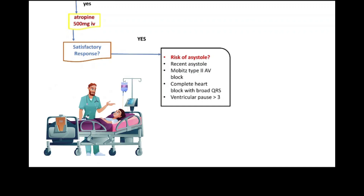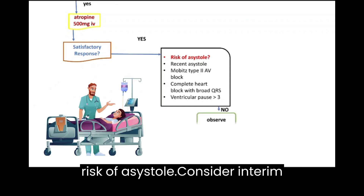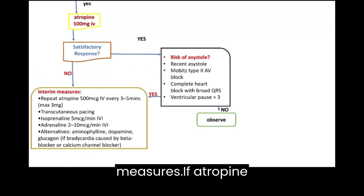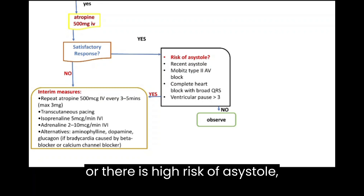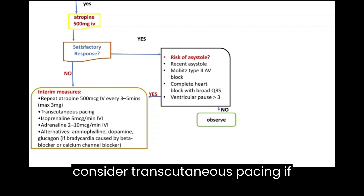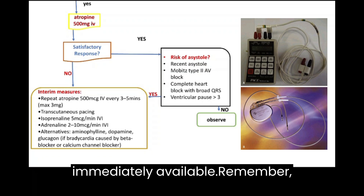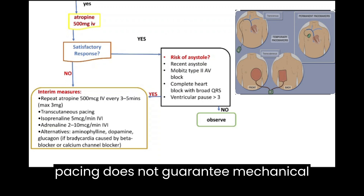Evaluate response and keep the patient on observation if there is no risk of asystole. Consider interim measures: if atropine does not provide a satisfactory response, or there is a high risk of asystole, consider transcutaneous pacing if immediately available. Remember, electrical capture with transcutaneous pacing does not guarantee mechanical capture.